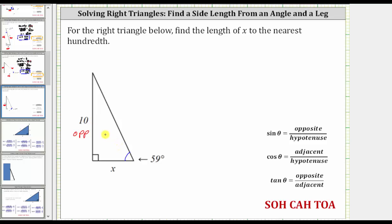The hypotenuse is always opposite the right angle. Because this is the right angle, this side here is the hypotenuse.